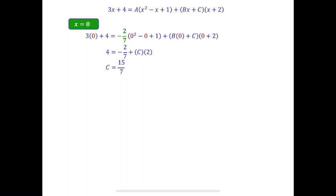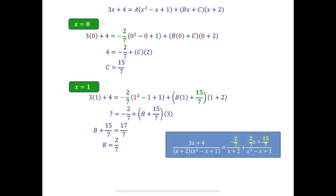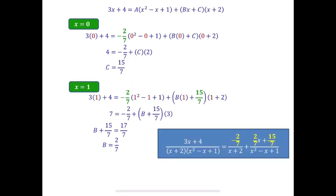So we substitute x equals to 1 into the equation together with the values of A and C, then solve for B. After that, we substitute the values of A, B, and C into the partial fraction. However, we have to write it in the simplest form, where the denominator 7 must be written at the bottom.